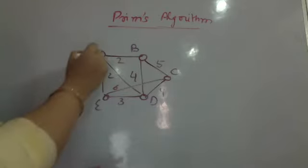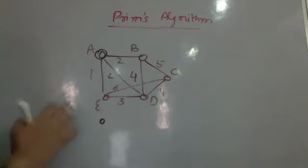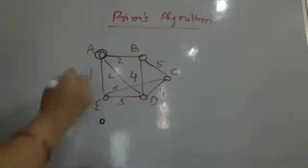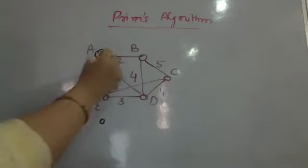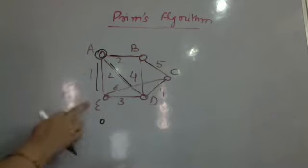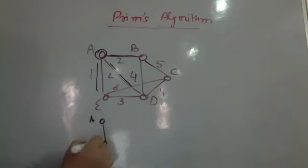We begin with node A. I pick up node A and try to see which edge starting from A has minimum weight. There are three edges coming out of A: A to E, A to D, and A to B. The edge with minimum weight is A to E, so I pick it and add it to my minimum spanning tree.